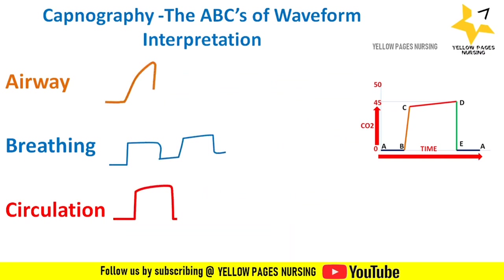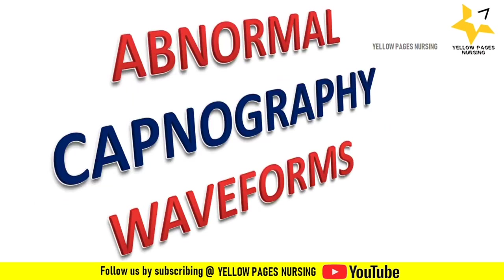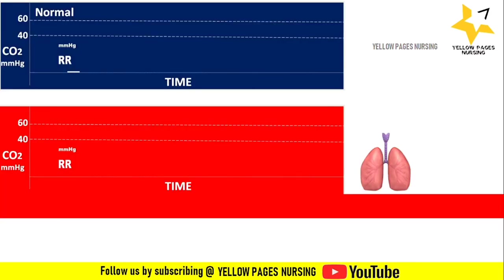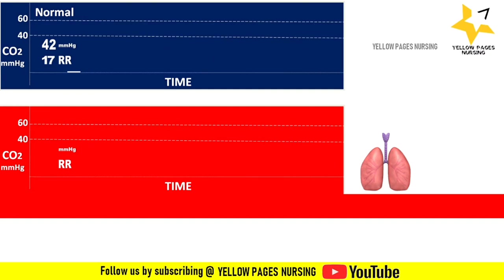Here are certain clinically important abnormal capnography waveforms. The normal capnography waveform has all phases within normal limits, and the ETCO2 value is 42 mmHg, which is within the normal range of 35 to 45 mmHg.